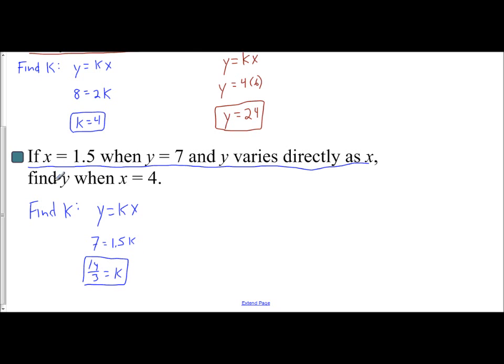You then use that constant to find y. y equals kx. You want to find y. You know your constant of variation is 14 thirds, and you're told x is 4. So y equals 14 times 4, which is 56 over 3. You get 56 thirds. And so that is my value for y when x equals 4.